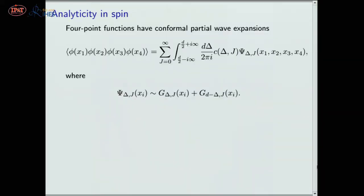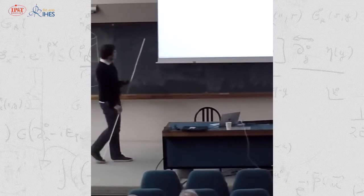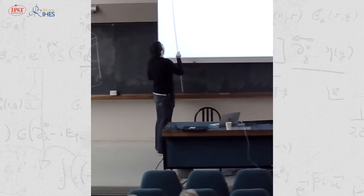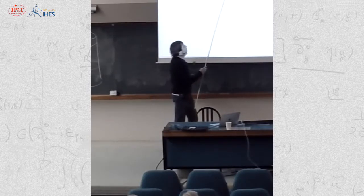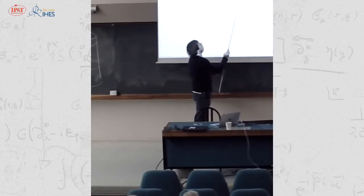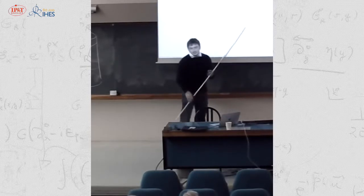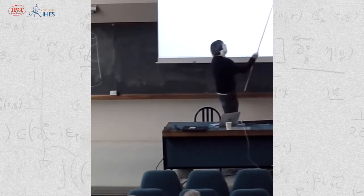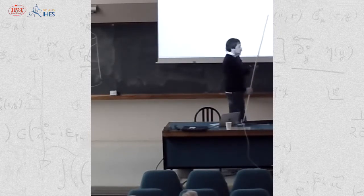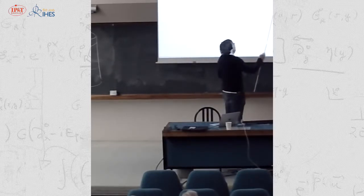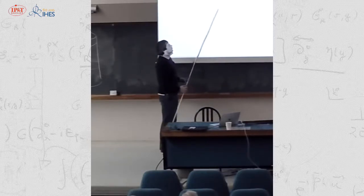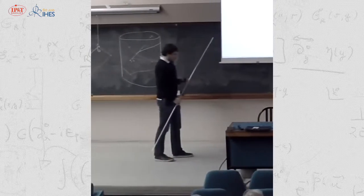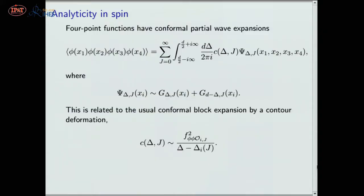Now I move to the question of analyticity in spin. As a reminder, for a scalar four-point function of identical scalars you can expand in conformal partial waves as a sum over spins and an integral over complex scaling dimension along the principal series times standard conformal partial wave functions. In terms of conformal blocks, the conformal partial waves are a sum of the conformal block plus the shadow conformal block. The relation between the conformal partial wave expansion and the OPE comes from the fact that the coefficient function C(Δ,J) has poles in the complex Δ-plane at scaling dimensions of physical operators, with residues proportional to OPE coefficients.